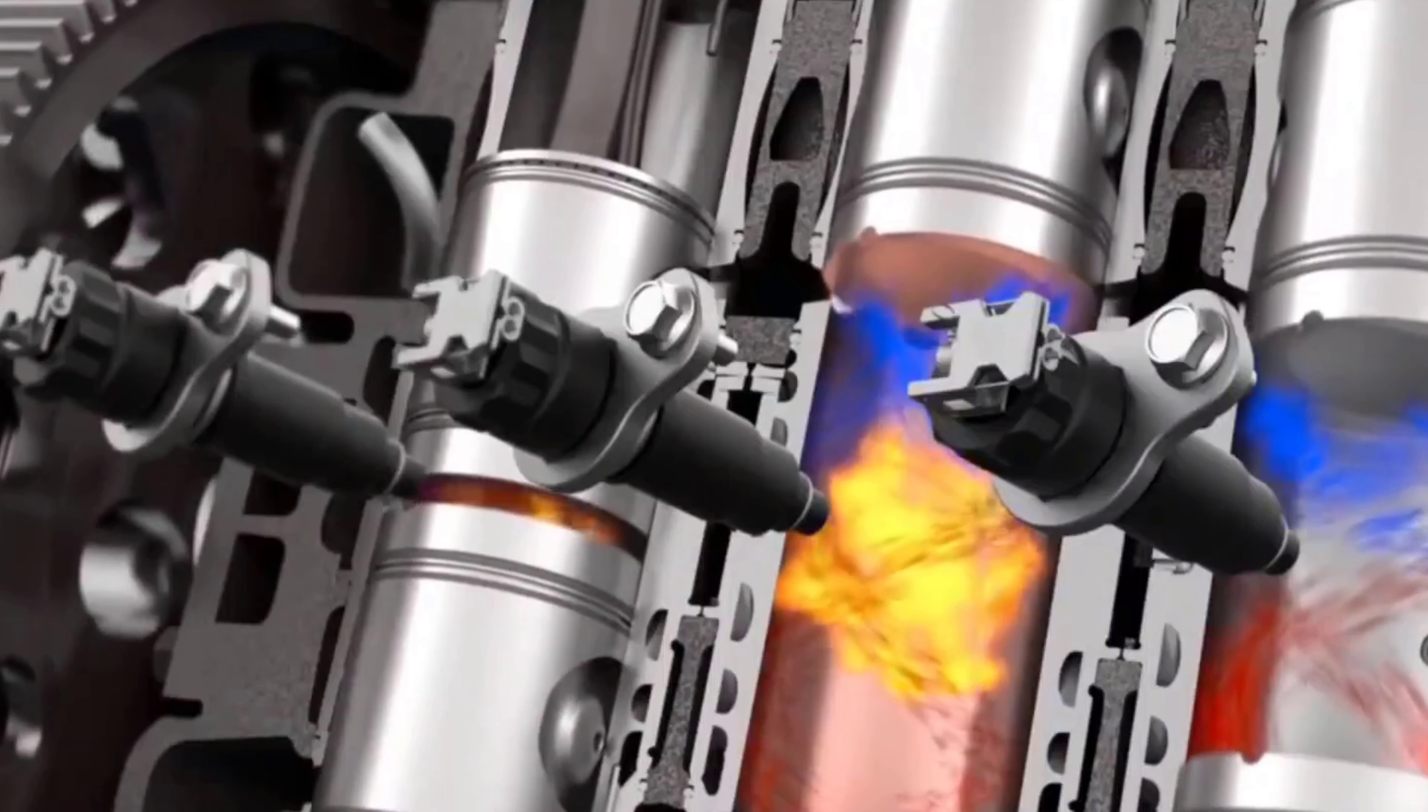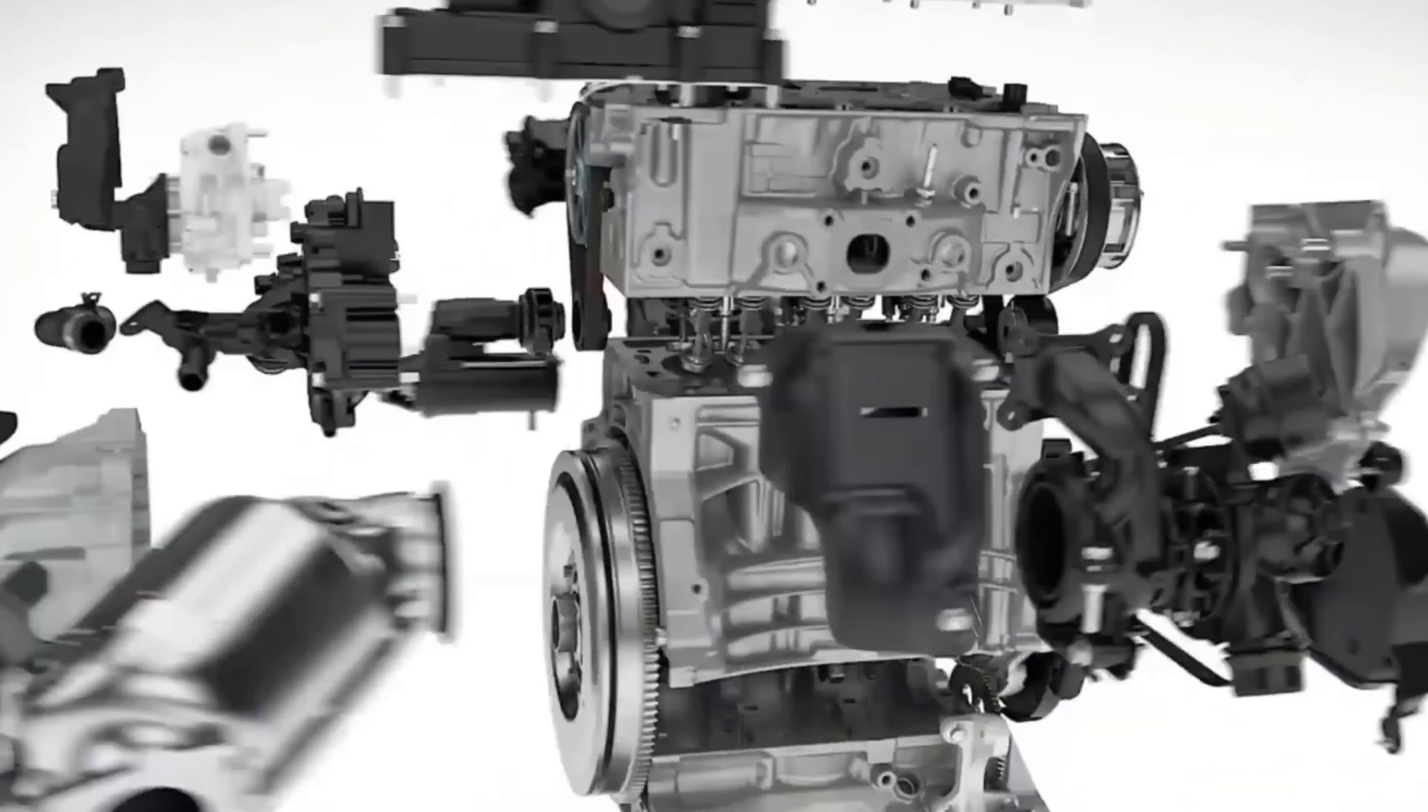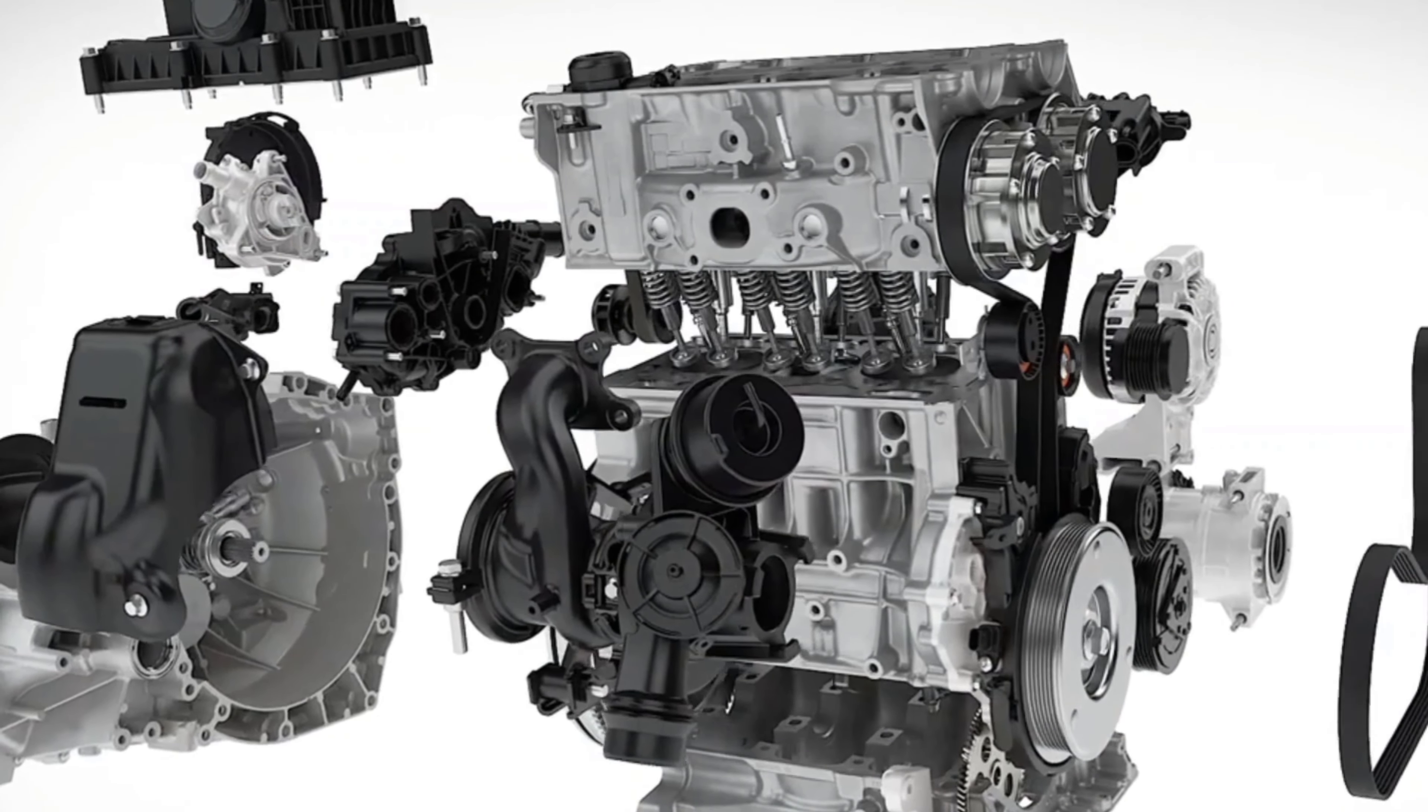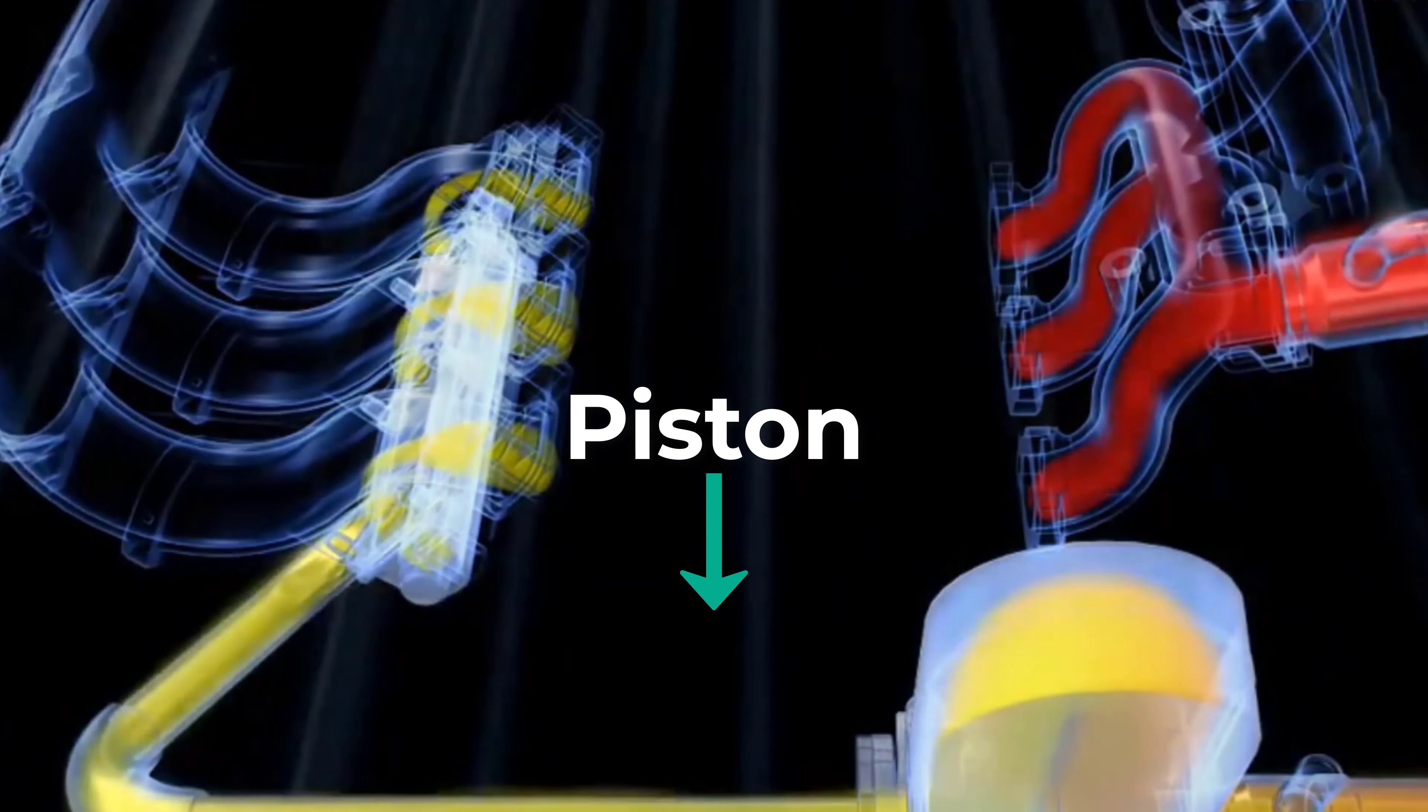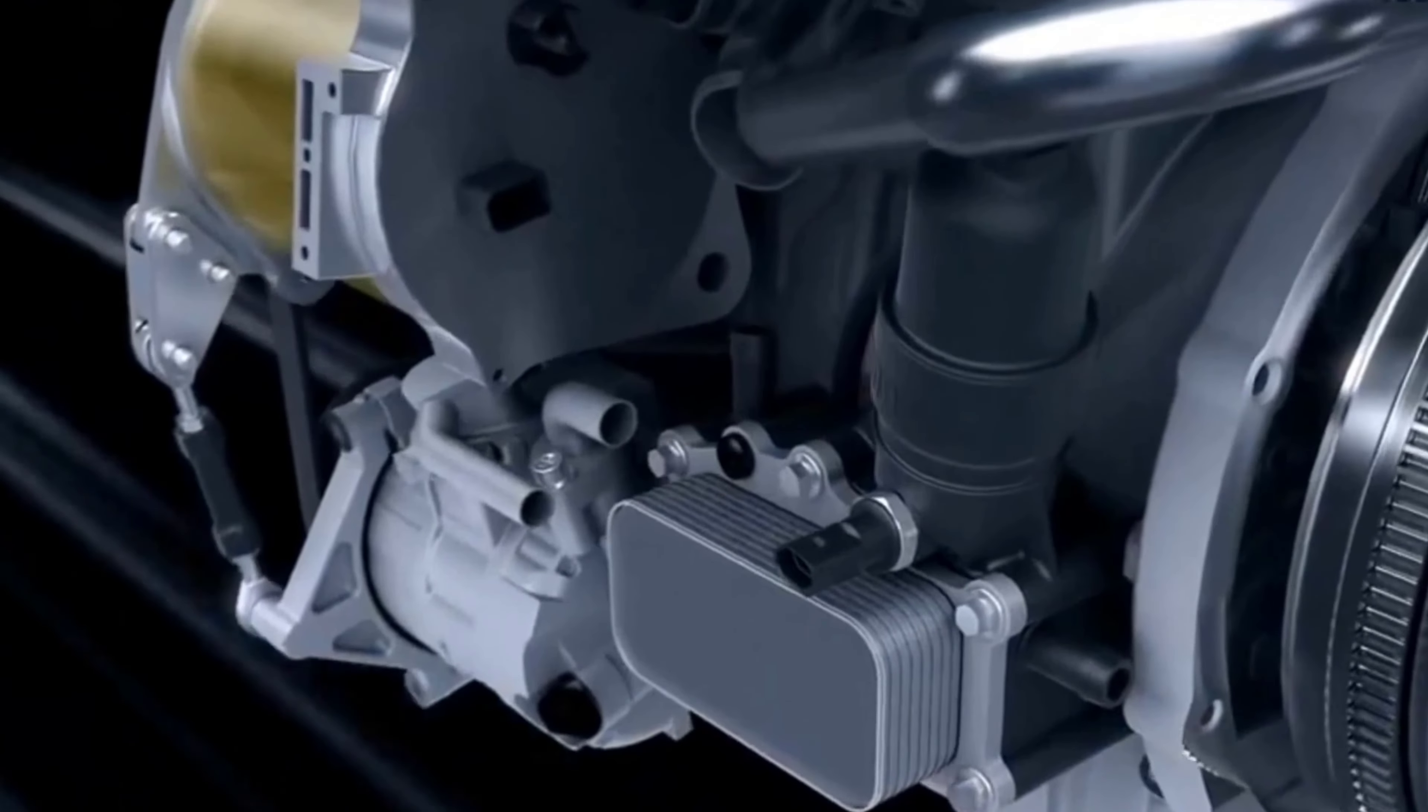Once the hydrogen air mixture is sufficiently compressed, a spark plug generates an electric spark to ignite the mixture. The ignition causes the hydrogen to combust, releasing a large amount of heat energy. The combustion of hydrogen rapidly expands the hot gases, creating a high pressure force that pushes the piston downward in the cylinder. This motion is converted into rotational motion through the engine's crankshaft.